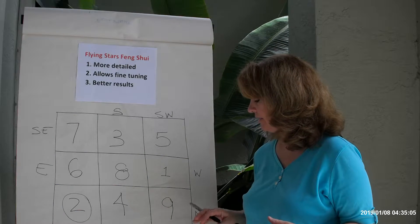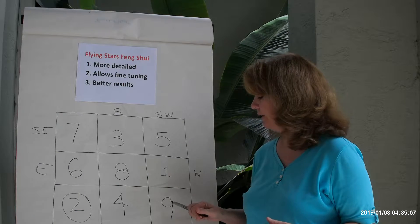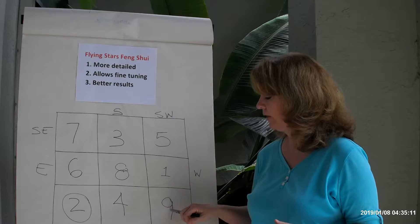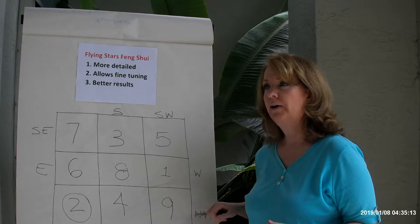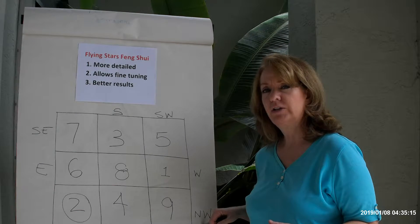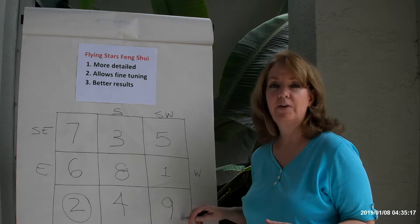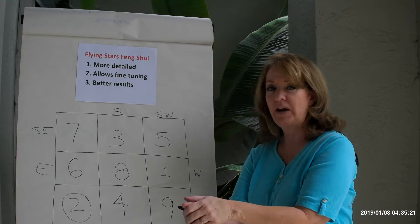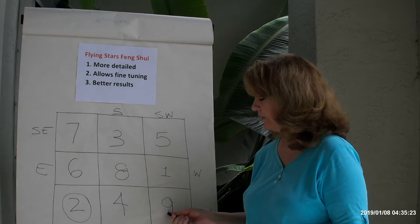The Northwest represents metal energy. The number 9 star represents fire energy, so the fire energy dampens down the energy of the metal. Think about the show Forged in Fire where they're taking the knives and metal and molding it. That's what this is doing.